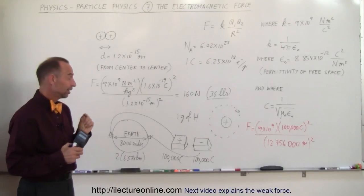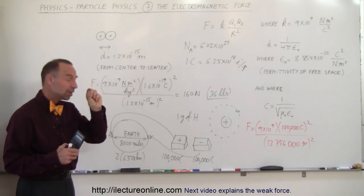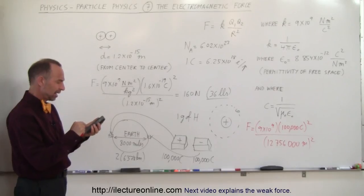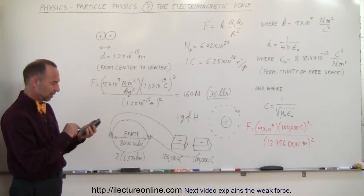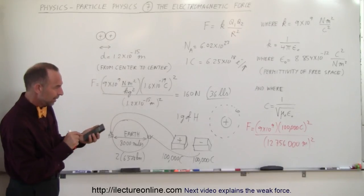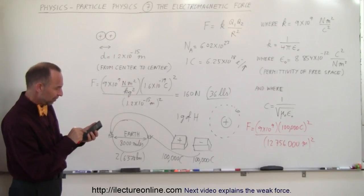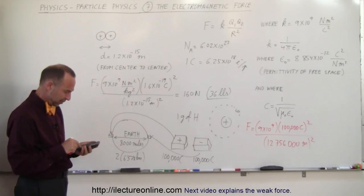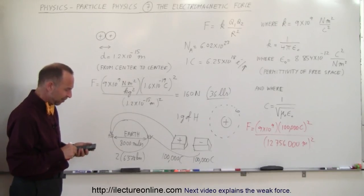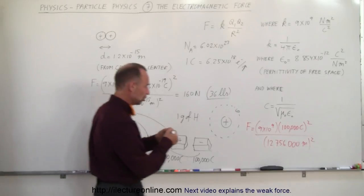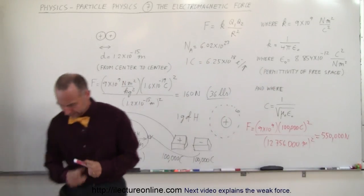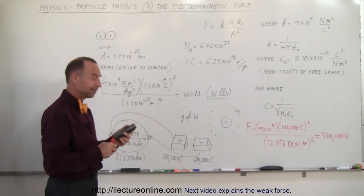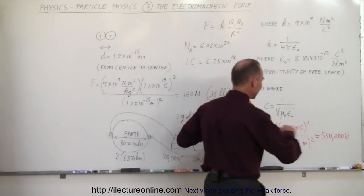So let's find out what would be the force between those two boxes. Remember, one gram, it's 1/28th of an ounce, a very small amount of hydrogen separated the protons from the electrons. We have 9e to the 9th times 100,000 squared, divided by 12,756,000 squared, equals 550,000 newtons. If you divide by 9.8 and times 2.2, we get about 125,000 pounds.